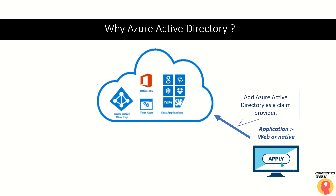Azure AD binds those attributes into a security token and provides it to you. With the help of an authentication handler or protocol, you consume that token and get the profile presented to the user. Instead of maintaining the entire user object on your application or creating local accounts, you simply accept the token from Azure Active Directory and move forward with your application features.